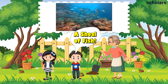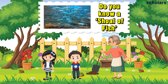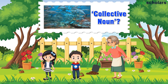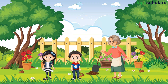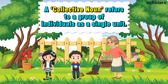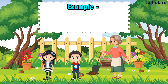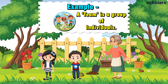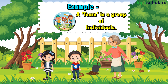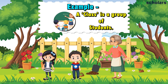A shoal of fish. Do you know a shoal of fish is a collective noun? What is a collective noun? A collective noun refers to a group of individuals as a single unit. For example, team and class. A team is a group of individuals. A class is a group of students.